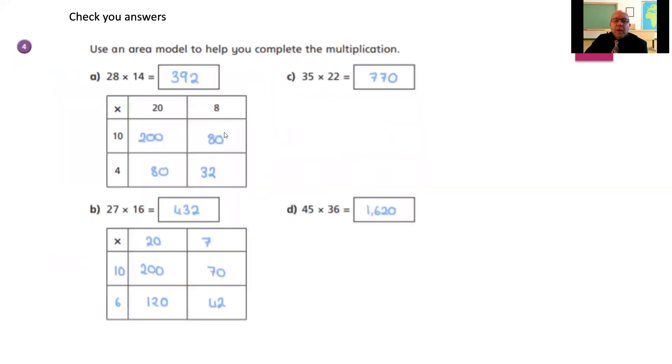And question four. The four answers are 392, 432, 770, and 1620. Give yourself a tick for each of those. If you've made an error in those, take another look at your grid and just double check each of the values. It's very easy to make a little mistake with your multiplication or even more easy to make a daft mistake with your addition. So always double check the addition.